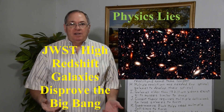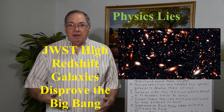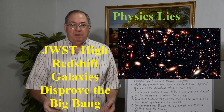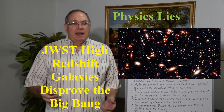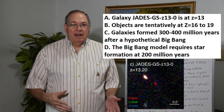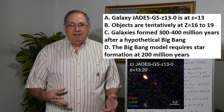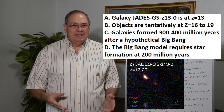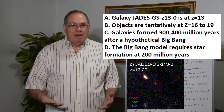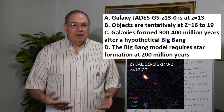I wanted to continue talking about JWST and the Big Bang, because JWST's high-redshift galaxies are ultimately going to disprove the Big Bang. So far they've identified galaxies at Z=13, and tentatively identified galaxies at redshifts 16 to 19, that will eventually be confirmed once you get enough spectroscopic data in particular.